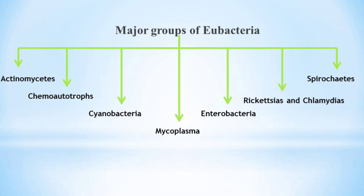The fourth group is Mycoplasma. They are unicellular, non-motile prokaryotes found in sewage water. They are parasites which cause diseases — for example, Mycoplasma pneumoniae. The fifth group is Enterobacteria. They are gram-negative bacteria and are pathogenic — for example, Escherichia coli, Salmonella, and Vibrio cholerae.